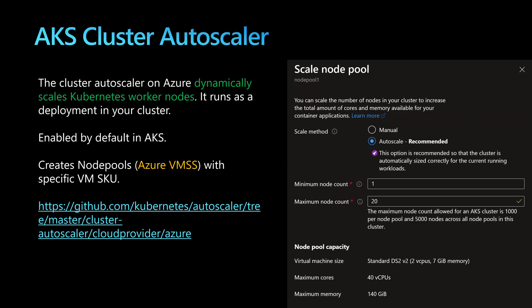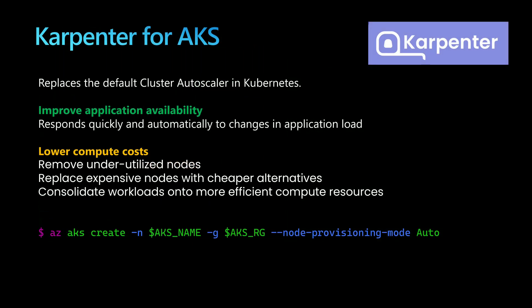Creating multiple node pools — more than three — means lots of management overhead, because you need to worry about autoscaling those node pools, and also updating and upgrading them whenever there is a new OS version, a new image version, or a new Kubernetes version. So Karpenter is here to try to replace the default cluster autoscaler for the non-system node pools, typically the user node pools.